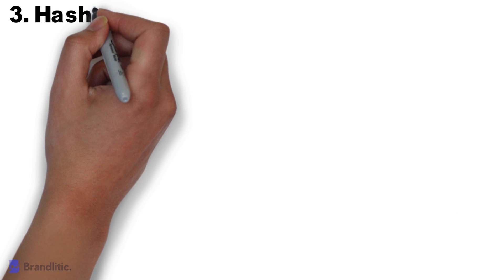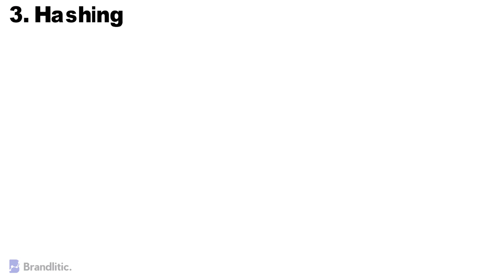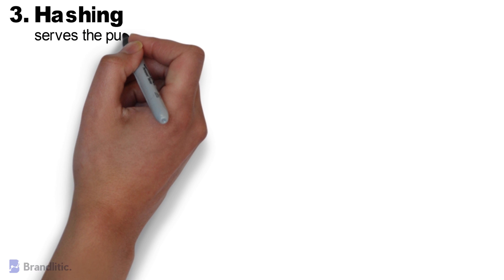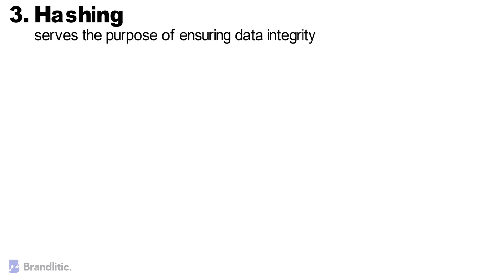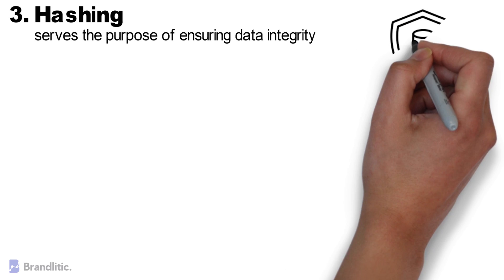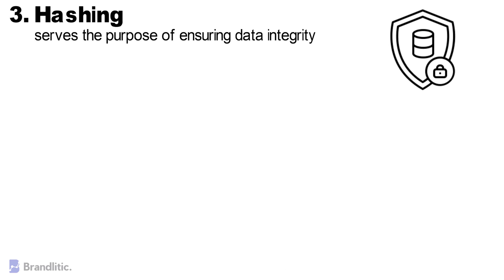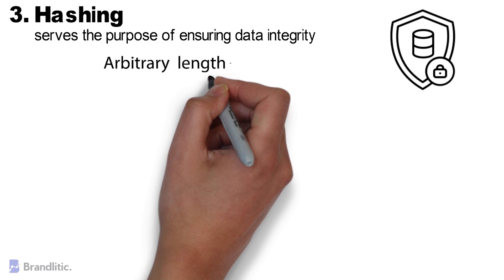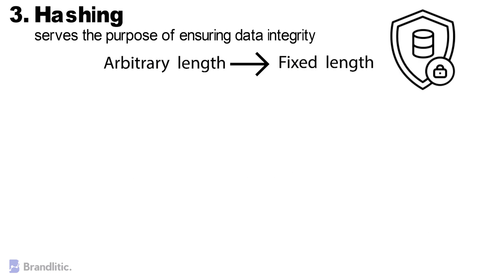Hashing. Hashing serves the purpose of ensuring data integrity — that is, making it so that if something is changed, you can know that it has changed. Technically, hashing takes any input of arbitrary length and produces a fixed-length string that has the following attributes.